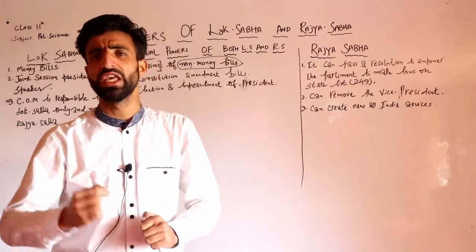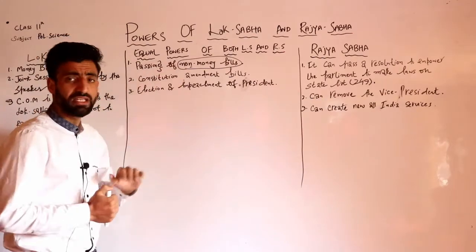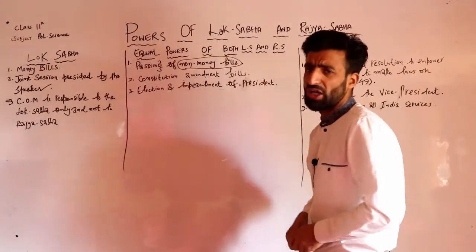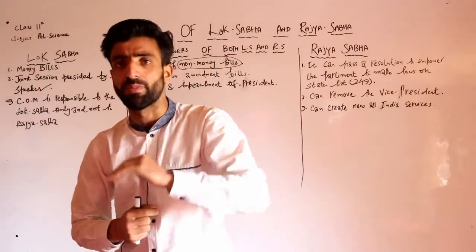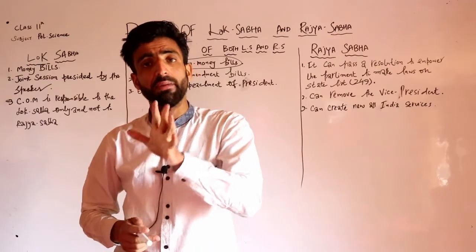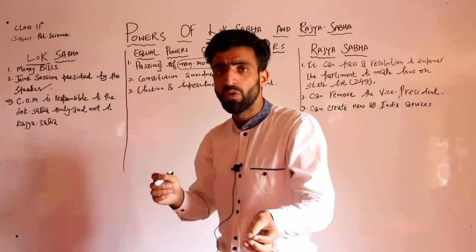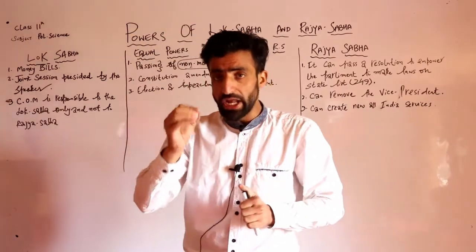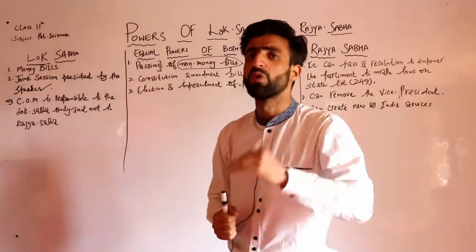For example, ordinary bills, constitutional amendment bills, financial bills, and other money bills - to pass these IC bills, both houses have equal powers. Any constitutional amendment bill can be introduced in any house of the parliament. It is an ordinary bill or non-money bill or constitutional amendment bill - this can be introduced in either house, and both have equal powers.